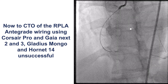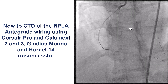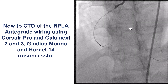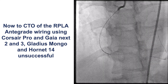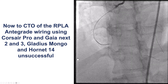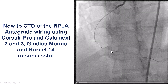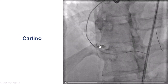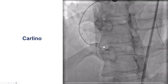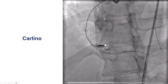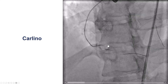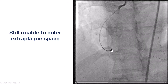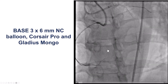At this point we debated proceeding with the CTO, but we had dual access, the patient was doing fine, and radiation and contrast dose were not high, so we decided to go ahead. We placed a Corsair and used multiple guide wires in an attempt to cross the proximal cap but were unsuccessful. We tried the Carlino technique — injecting contrast — but it was a blunt cap and we could not make any penetration into the area of the occlusion. We also tried to get into the extraplaque space but could not.